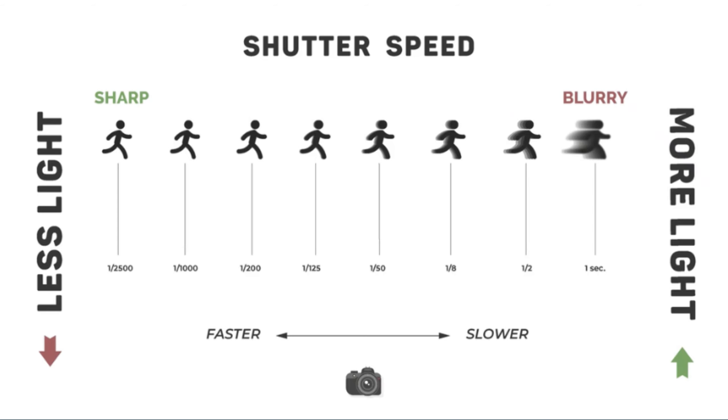Shutter speed refers to the amount of time the camera shutter is open to let light hit the sensor. It is measured in fractions of a second, like 1/1000 or 1/30, and even in whole seconds for longer exposures. A fast shutter speed like 1/1000 freezes motion — so if you have sports activity going on and want to capture the moment as it's happening, you'll need to dial up your shutter speed to stop motion.